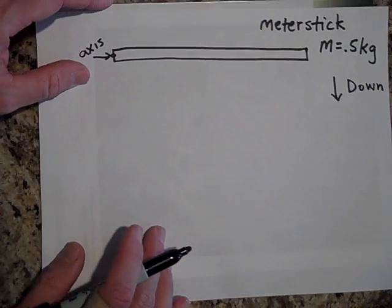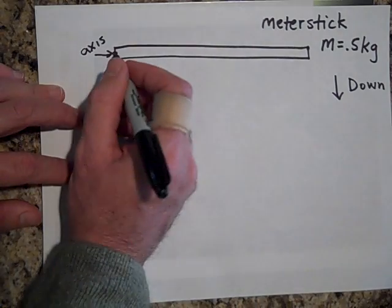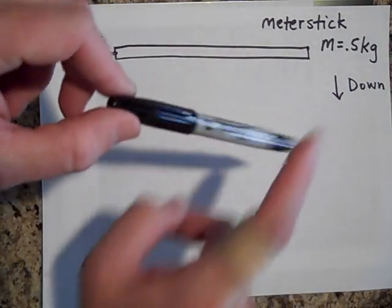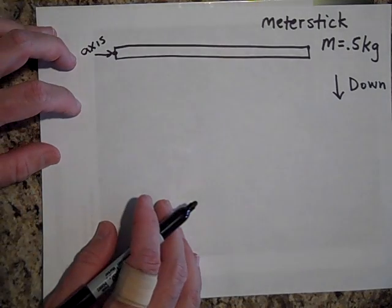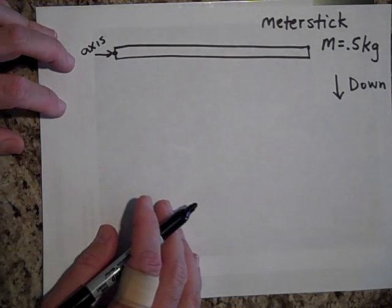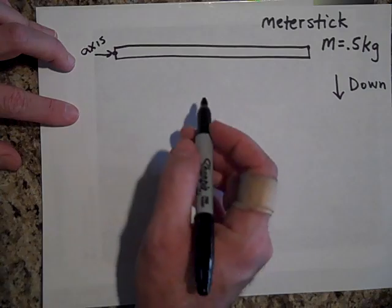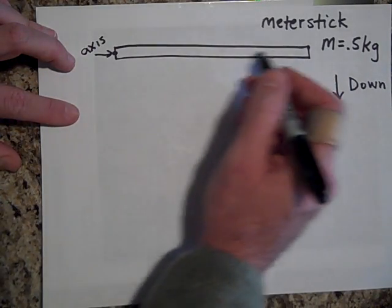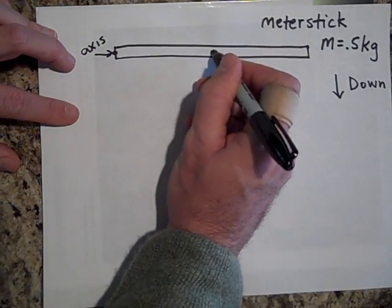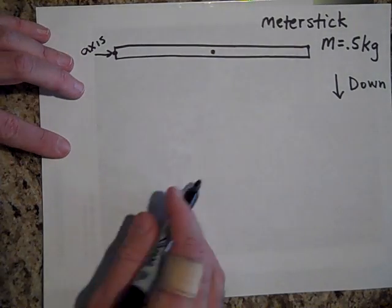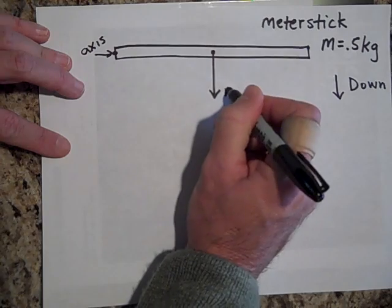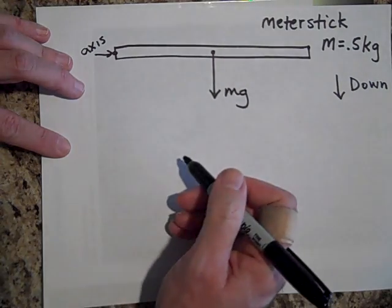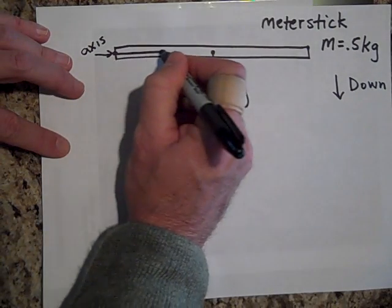Well, the reason why it's going to rotate if I hold it at one end and it goes down is because there's a torque on it and the torque is due to the weight. And so let me show you how you handle this. We're going to look at the center of mass of this meter stick being right there. And MG is straight down.